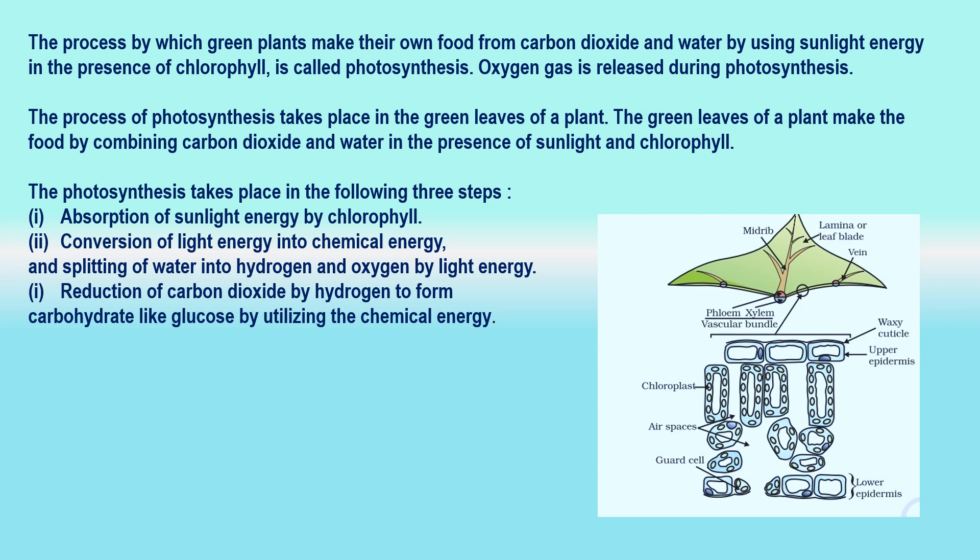The green pigment chlorophyll present in green leaves helps in absorbing energy from sunlight. Oxygen gas is produced as a by-product during photosynthesis and goes into the air. Photosynthesis takes place in three steps: absorption of sunlight energy by chlorophyll; conversion of light energy into chemical energy and splitting of water into hydrogen and oxygen by light energy; and reduction of carbon dioxide by hydrogen to form carbohydrates like glucose by utilizing the chemical energy.